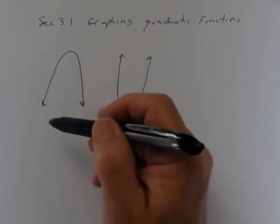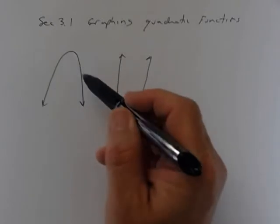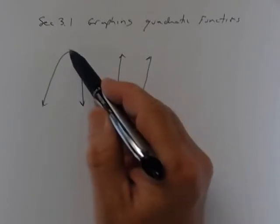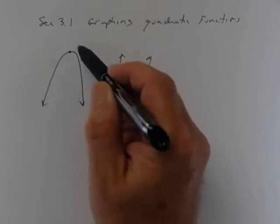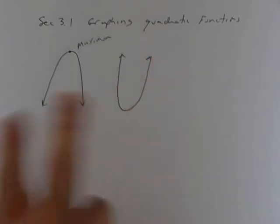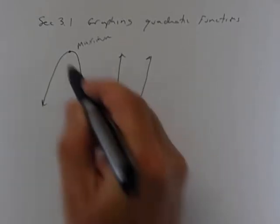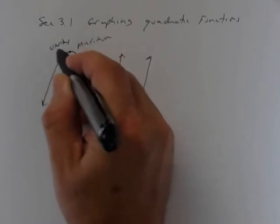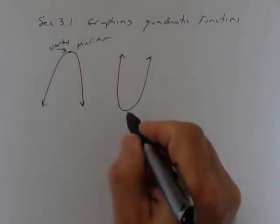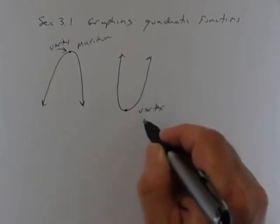Remember when we talked about increasing and decreasing — the function goes from increasing to decreasing, so this would be a maximum point. One of the things you'd be asked is what is that maximum point and what's the maximum value. This vertex is a maximum, and over here this vertex happens to be a minimum.